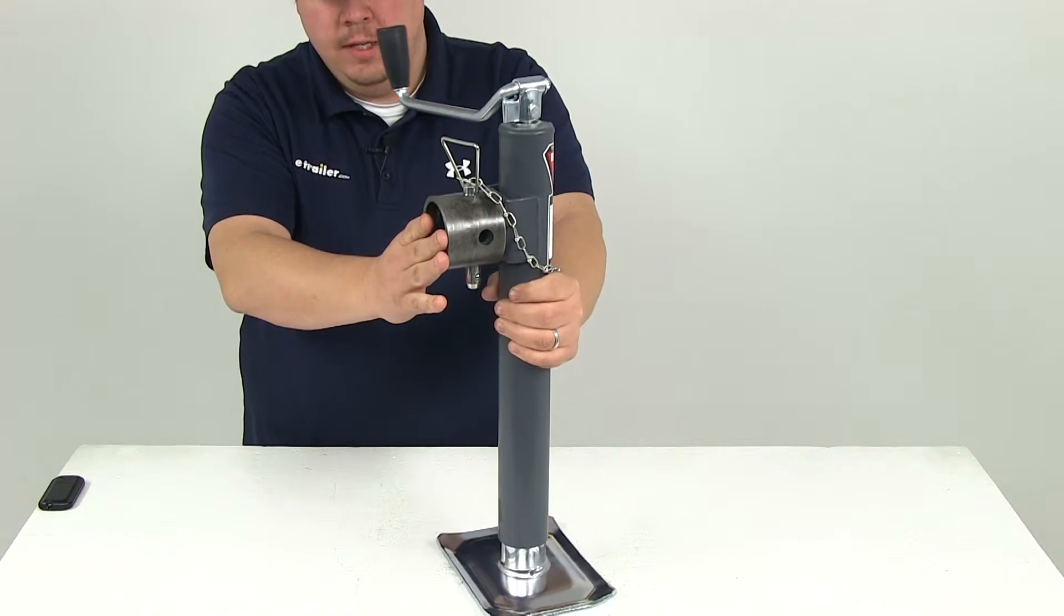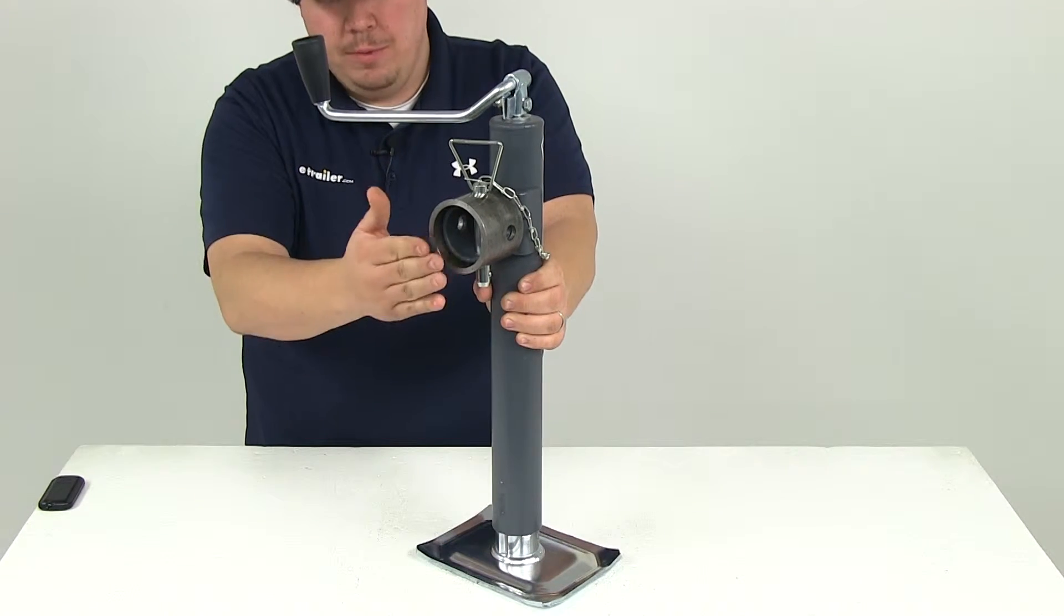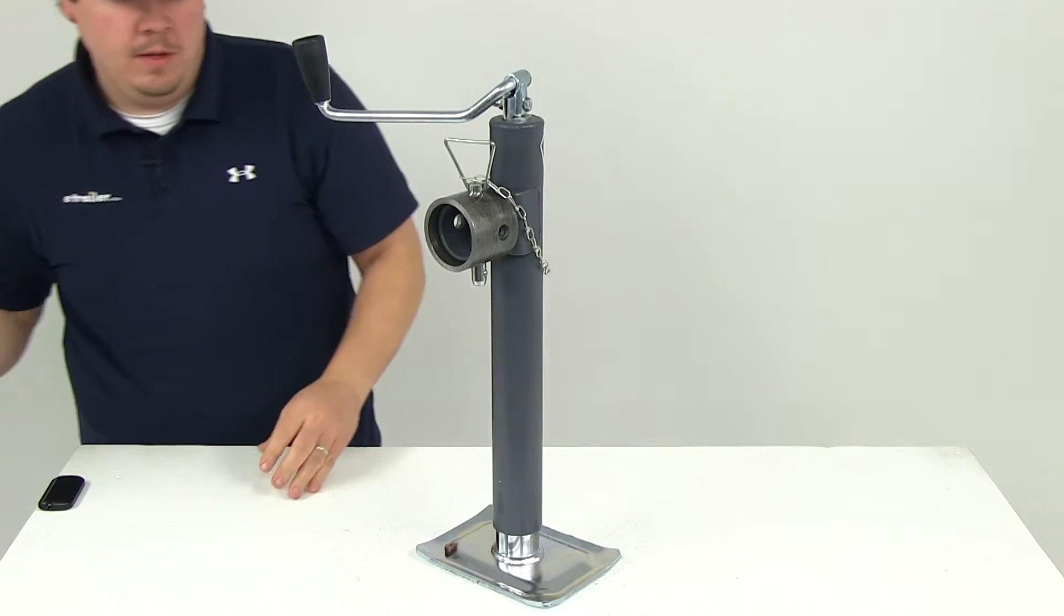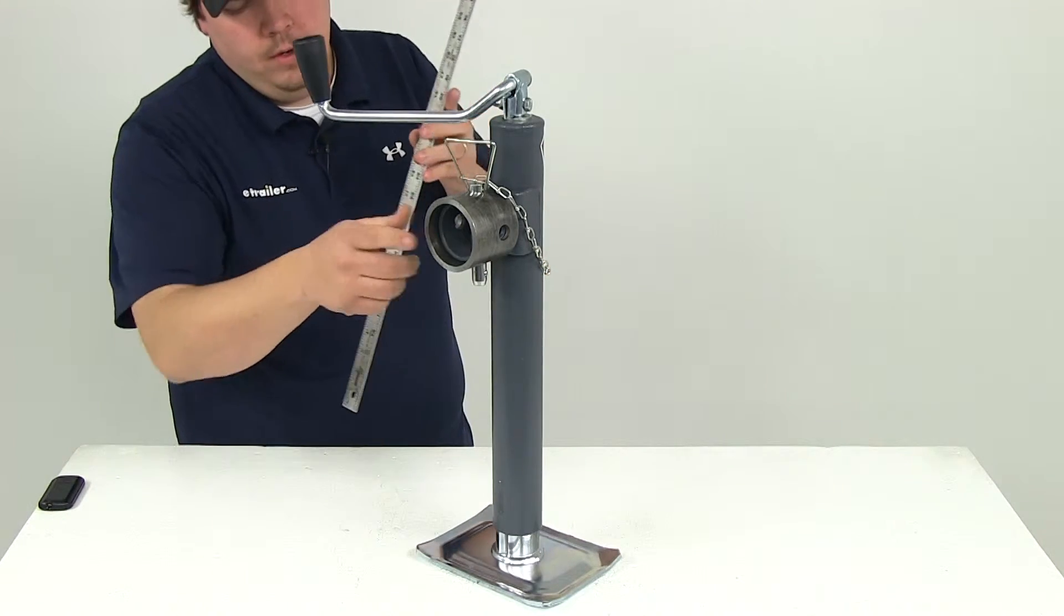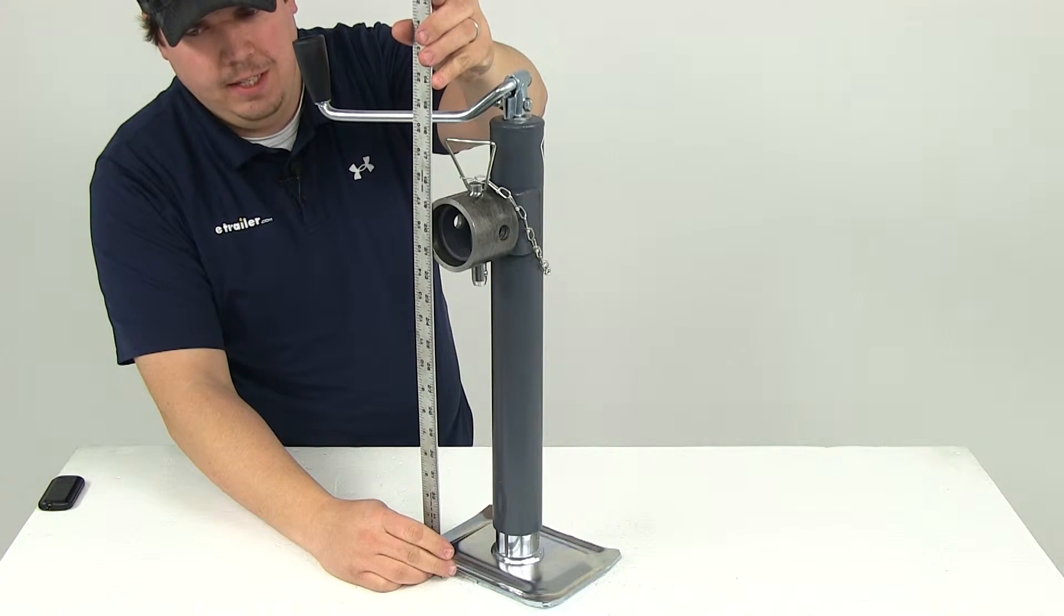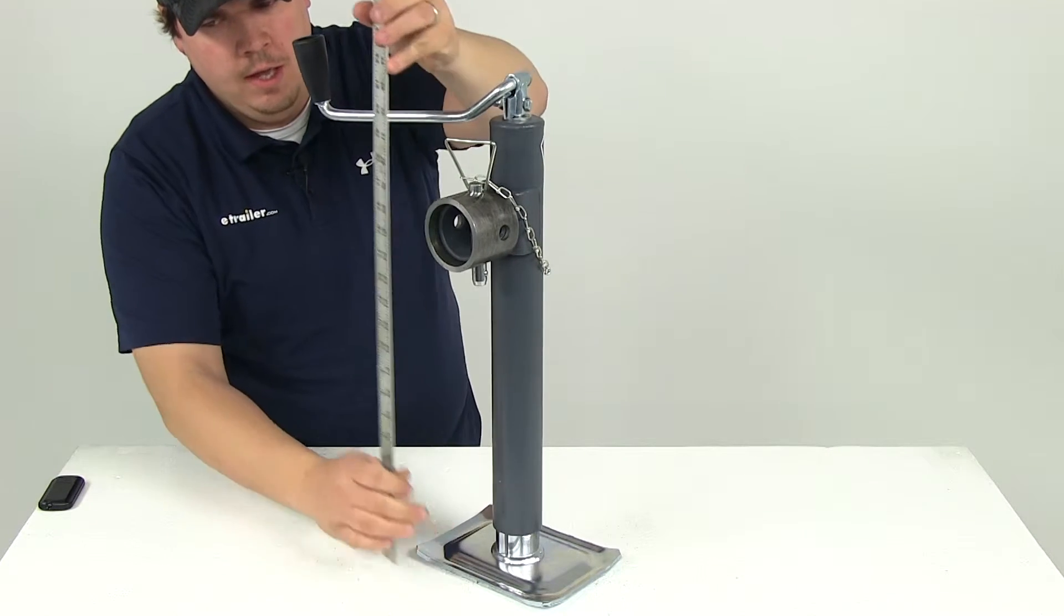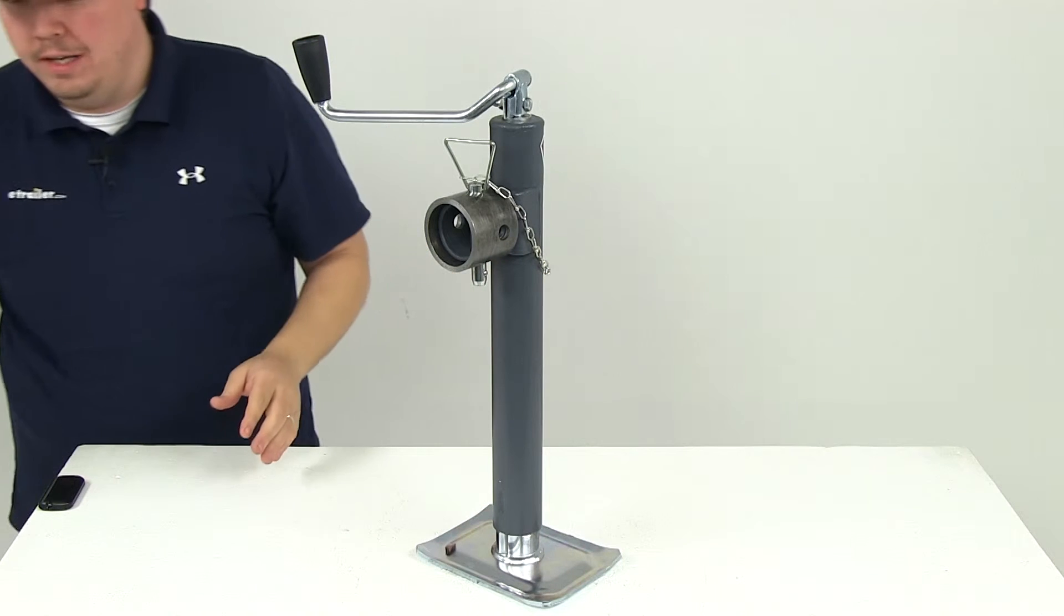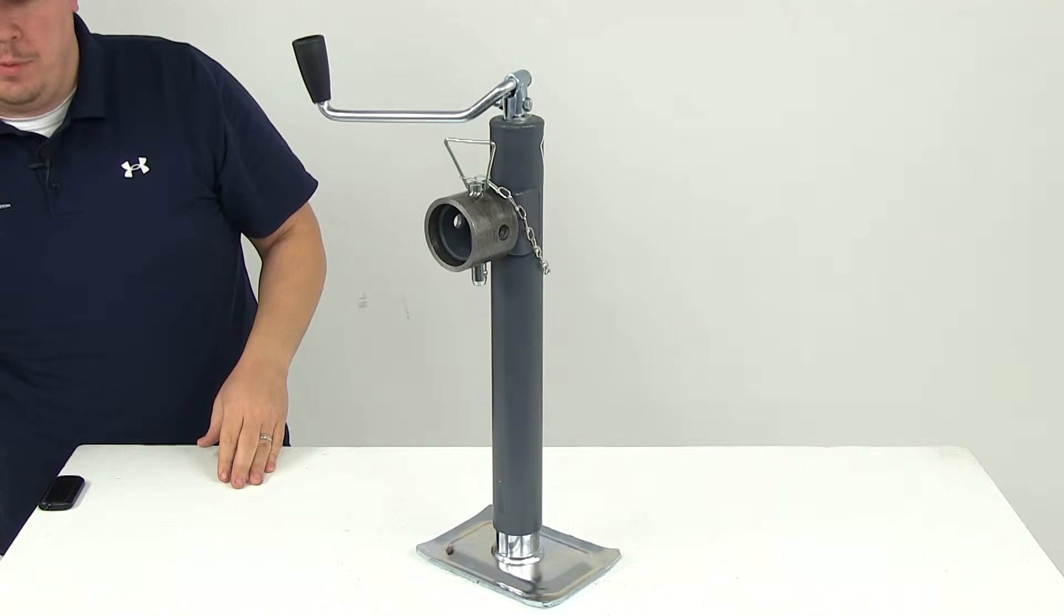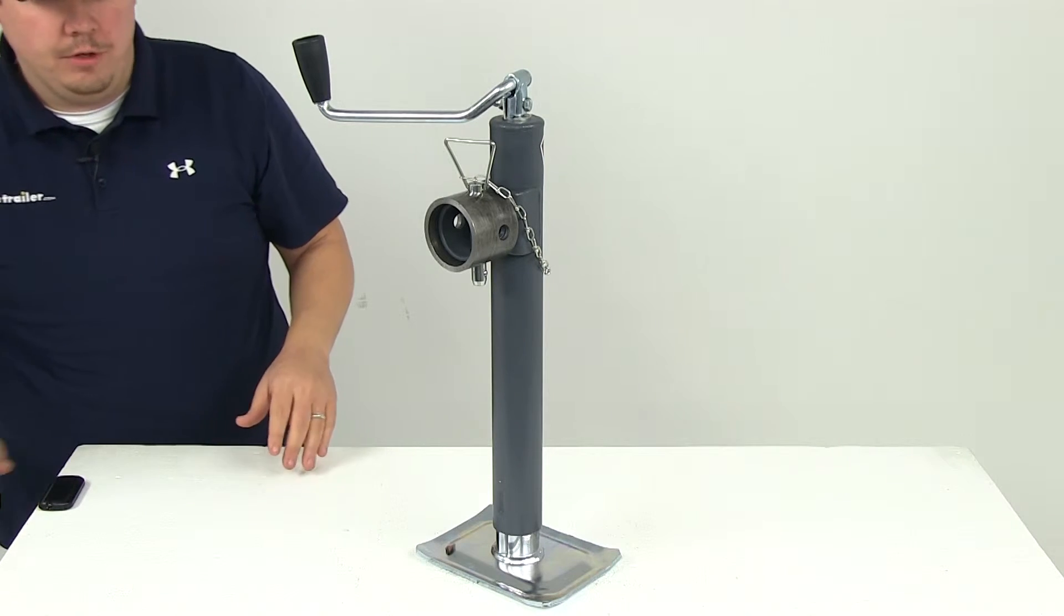This is a weld on application. The bracket height from the ground in a fully retracted position is about 15 and 13/16 of an inch. When fully extended that measurement increases to 30 and 13/16 of an inch, which is where we get that 15 inches of lift or travel from.